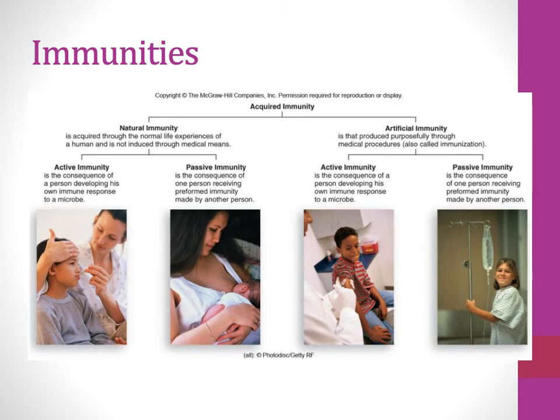With artificial active immunity, an example would be immunizations or vaccines where heat-treated or inactivated microbes are given and your immune system develops a response. With artificial passive, someone else's immune system does the work — examples would be blood transfusion, convalescent plasma after someone has recovered from an illness, or injection of immunoglobulins that would hopefully protect you against potential infection.